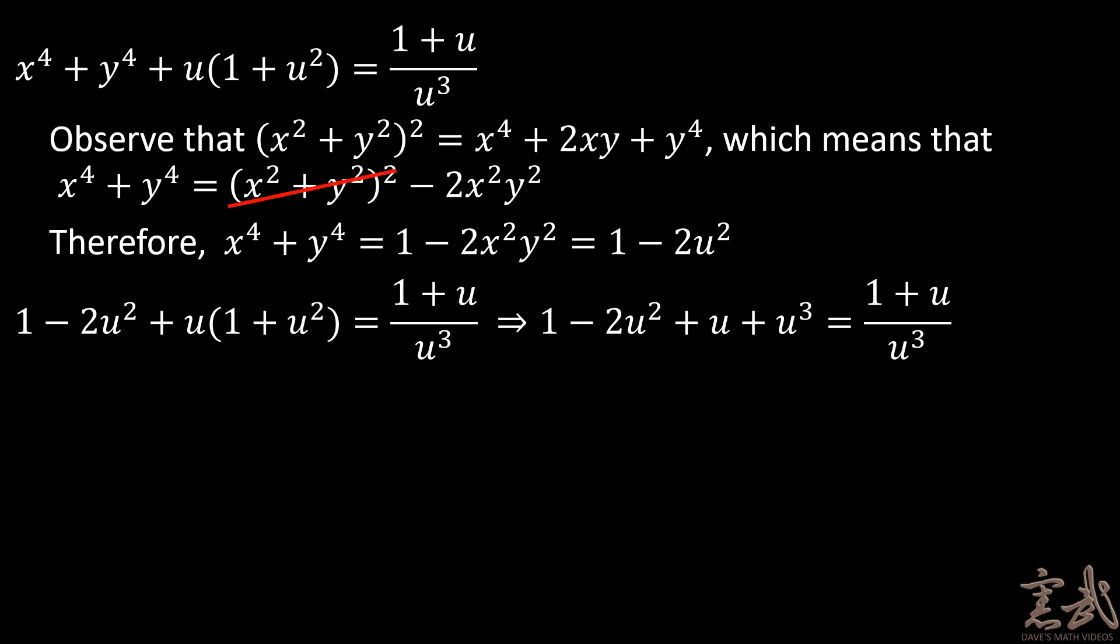So when I do the algebra on this, I get 1 minus 2u squared plus u plus u cubed is equal to 1 plus u over u cubed. And then I can multiply both sides by u cubed to get u cubed minus 2u to the fifth plus u to the fourth plus u to the sixth is equal to 1 plus u.